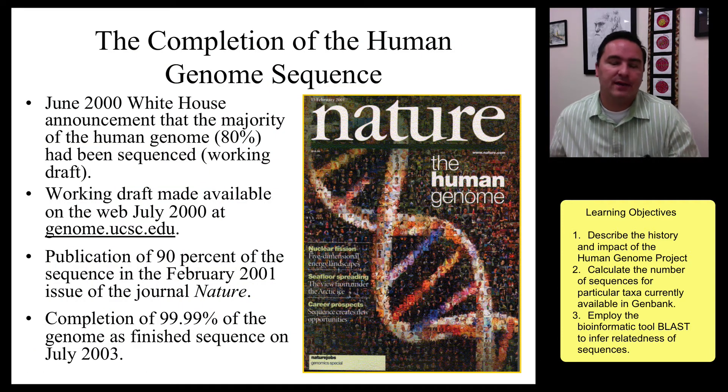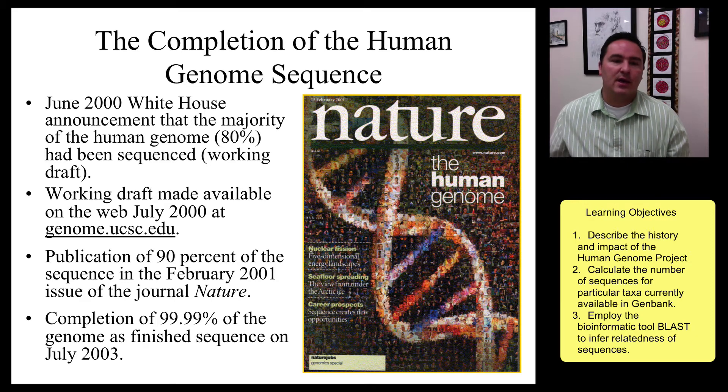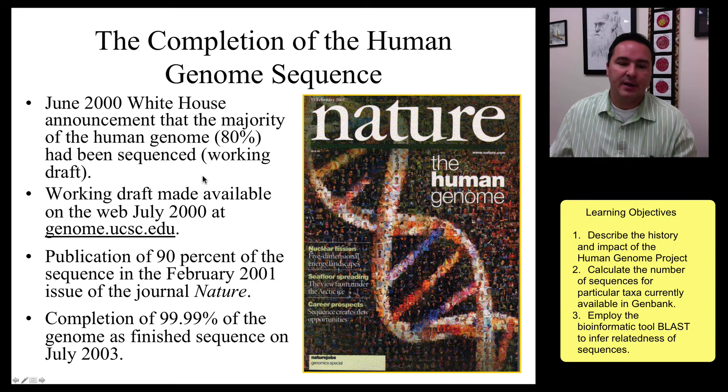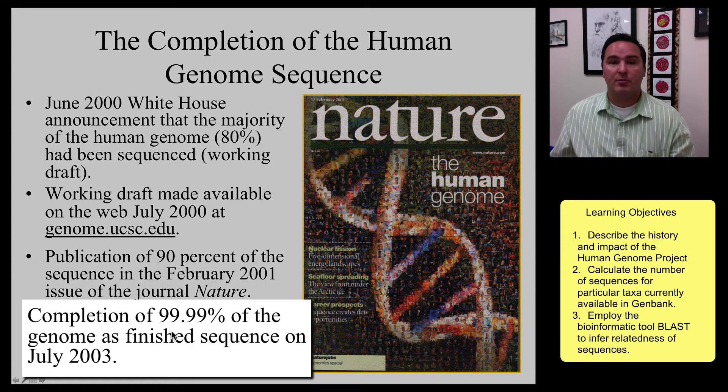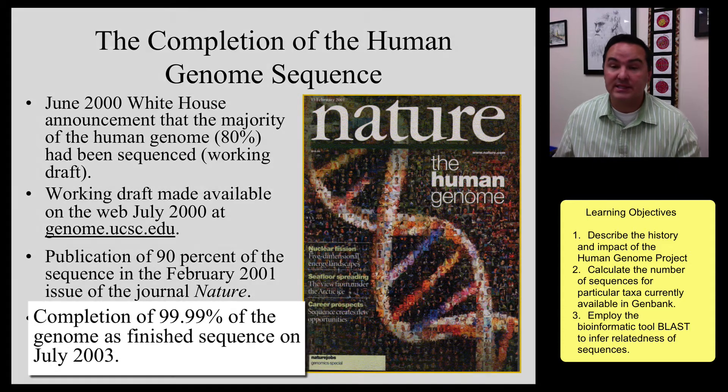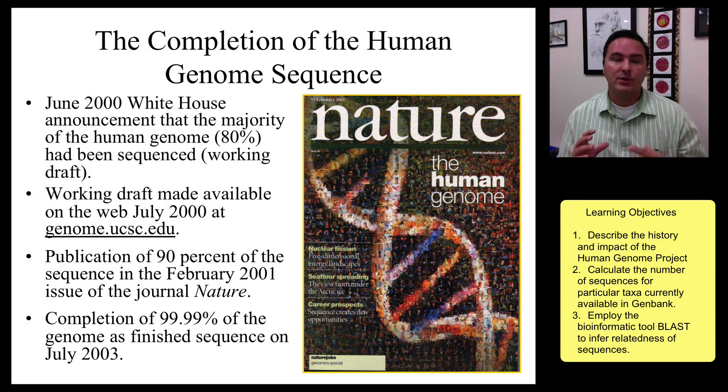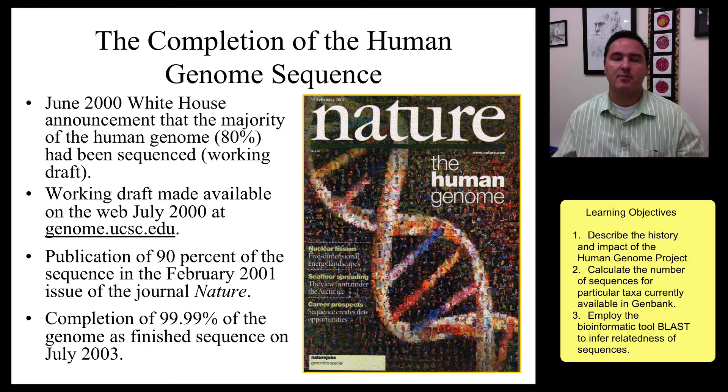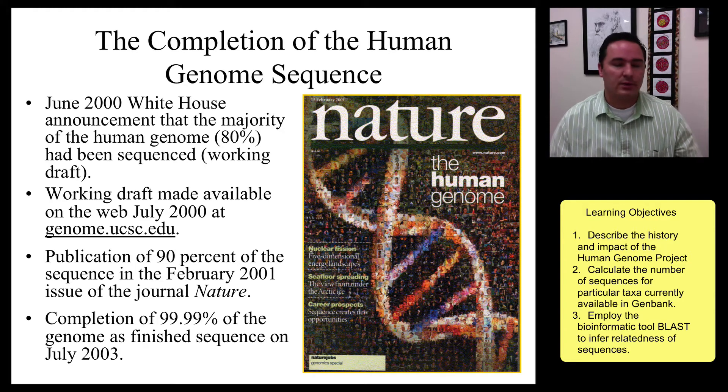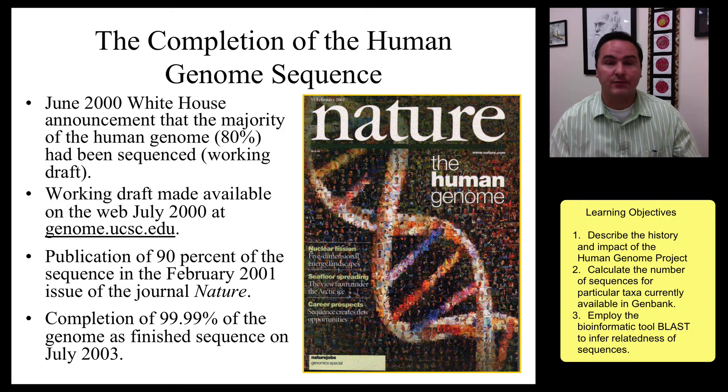So in 2000, 10 years after the initiation of the project, it was announced that 80 percent had been done. In 2001, 90 percent, and then in 2003, the Human Genome Project was complete, at least the sequencing of the DNA. Now that was only one part of the project, was actually to just get everything sequenced from that, though there's now multiple pathways that still need to be continued to have lots of research done on them.